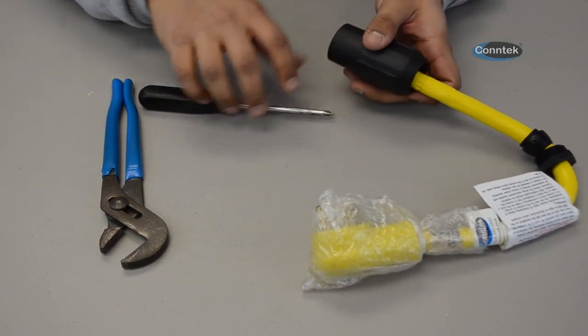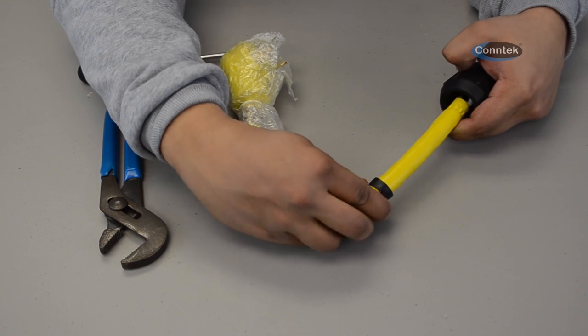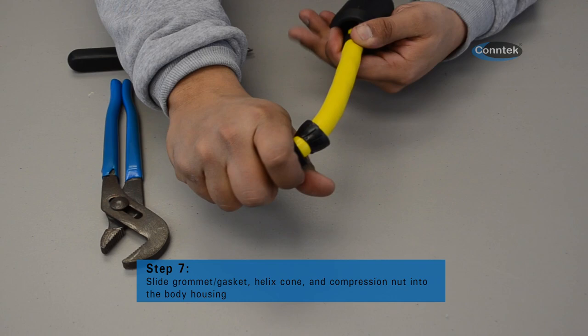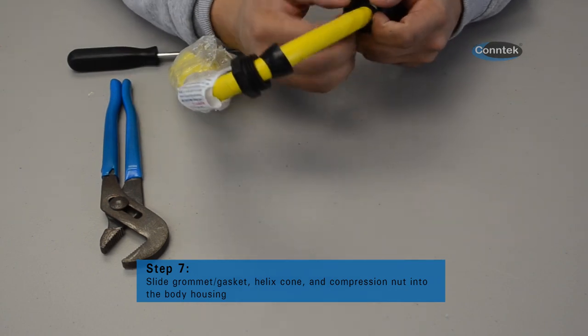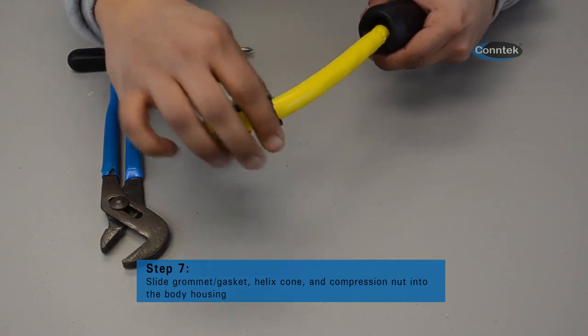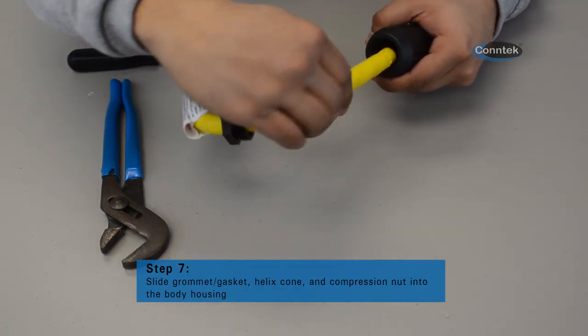Once the screws have been tightened, you will begin to slide the grommet or the gasket up into the body housing, then the helix friction cone, and lastly, the compression nut. Once the compression nut is in place, firmly tighten it with either a channel lock or a crescent wrench.